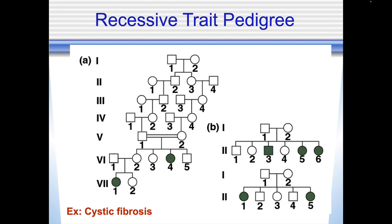Here's an example of a recessive trait pedigree in connection with cystic fibrosis. It can skip generations — in the first one, and then in the fifth generation you get an affected individual. That probably means individuals in generation five, one and two were heterozygous for the trait — they were carriers. Individual four received a double dose of the recessive allele and therefore had the disorder.